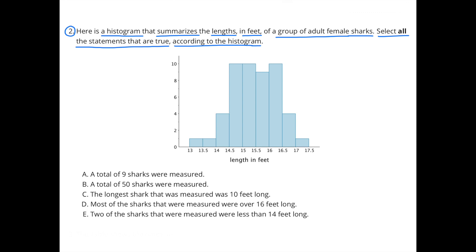Number 2. Here is a histogram that summarizes the lengths in feet of a group of adult female sharks. Select all the statements that are true according to the histogram.